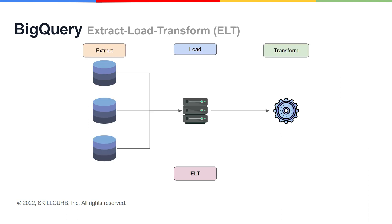Last on our list is Extract, Load, and Transform, or ELT systems. You extract data from files in Google Cloud Storage, then store that data in close to raw format in BigQuery. You transform the data on the fly using BigQuery views. ELT systems are suited for experimental datasets where you are not yet sure what kinds of transformations are needed to make the data usable, or any production dataset where the transformation can be expressed in SQL.